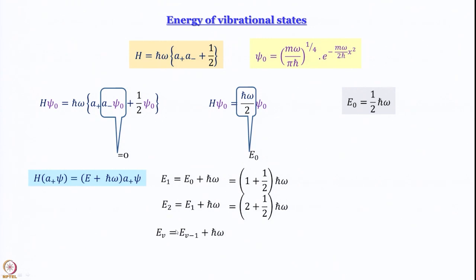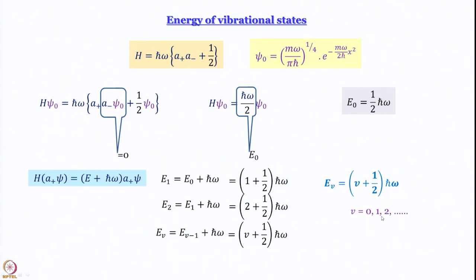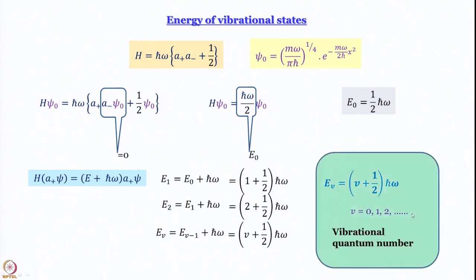In general, Eᵥ = Eᵥ₋₁ + ℏω = (v + ½)ℏω, where v is the vibrational quantum number ranging from 0, 1, 2, 3, and so on up to infinity. This is the most general form of the energy of a quantum harmonic oscillator. We have been able to find the expression for the energies of not only the lowest energy state but all energy states, simply by using the ladder operators.